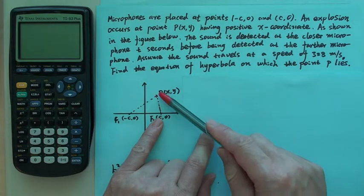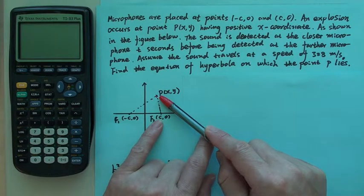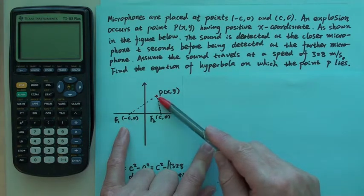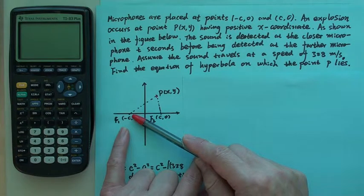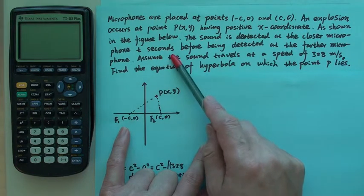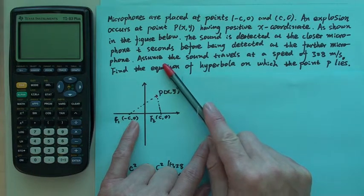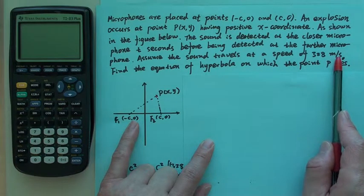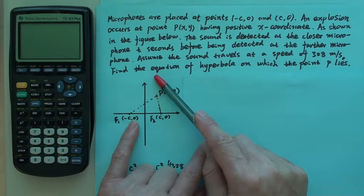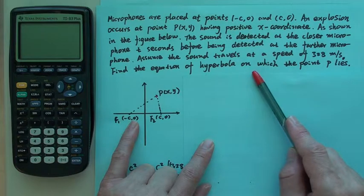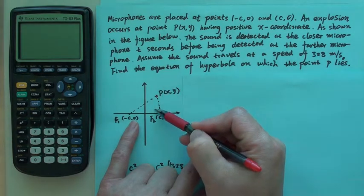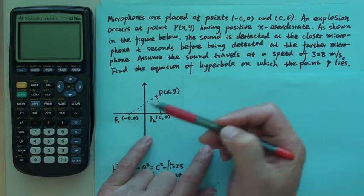This tells us that when the explosion occurs here, this microphone hears first, and then the other one is far away from P. So this microphone hears the explosion later — two seconds later. You may notice there are two branches.